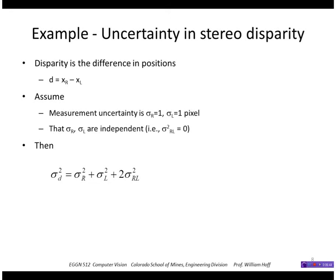Then using the formula on the previous page, we can show that it's just the sum of the variances of the right and the left plus their cross covariance here. So if they really are independent, then this is zero.